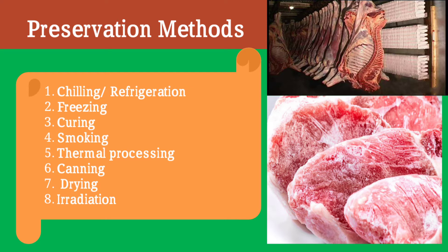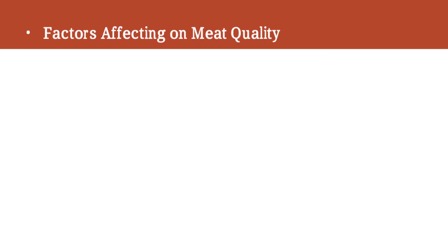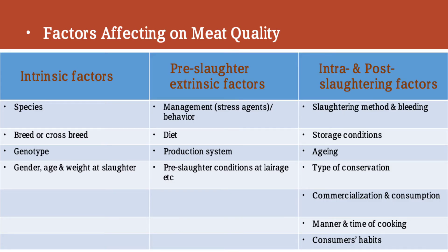Before discussing the methods of preservation, we should know the common factors which affect the quality and tenderness of meat. Number one is intrinsic factors, which include species, breed or crossbreed, genotype, age, gender, and weight at the time of slaughter.